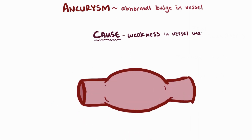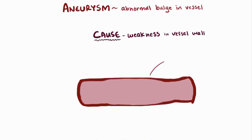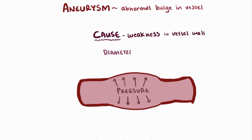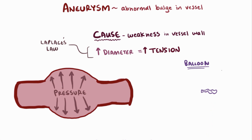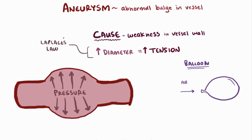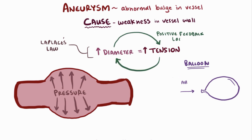Aneurysms are caused by a weakness in the blood vessel wall — really anything that causes the wall to weaken can cause an aneurysm. When a blood vessel wall weakens, it struggles to contain the pressure of the blood, so the lumen diameter increases. Pressure tension on the walls then increases as the diameter grows, thanks to Laplace's law, making the aneurysm even bigger and creating a cycle of continuous bulging. You've likely experienced this when blowing up a balloon — the first breath is tough, but the next several are easy. This is why aneurysms usually get bigger over time.